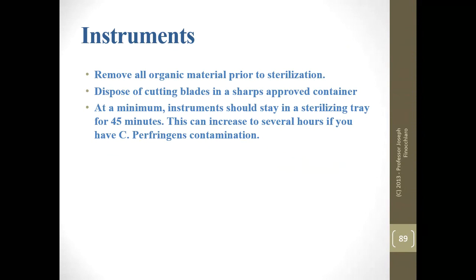For instruments: clean them before putting them in the drip tray or sterilizer. Some facilities use a stainless steel dishwasher with a disinfection cycle — just make sure everything is clean first. Dispose of anything sharp in the proper sharps container. At a minimum, if using a cold sterilant, soak for 45 minutes to kill just about everything. If you have a case of tissue gas or gas gangrene involving Clostridium perfringens, you're looking at several hours — separate those instruments in a separate container and let them sit overnight.